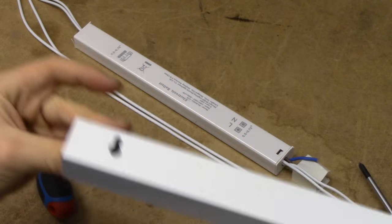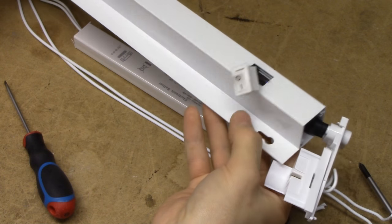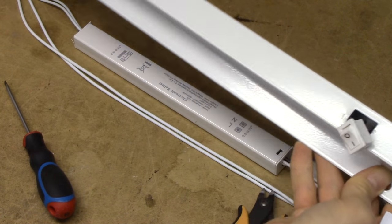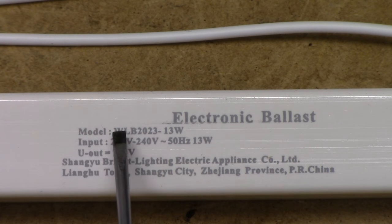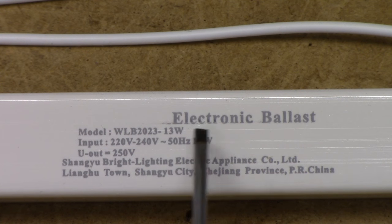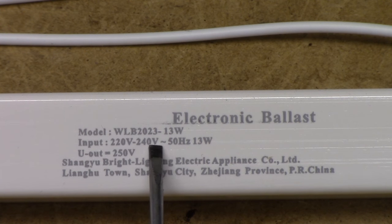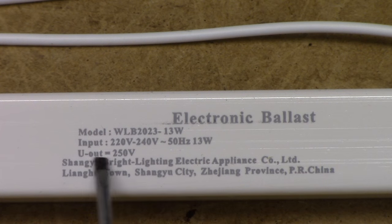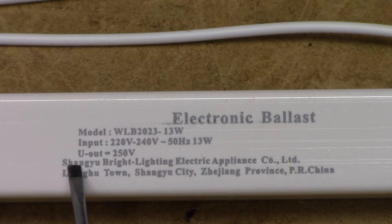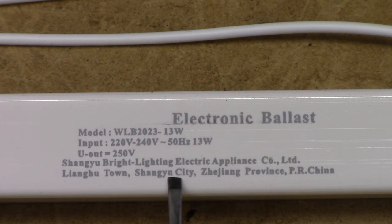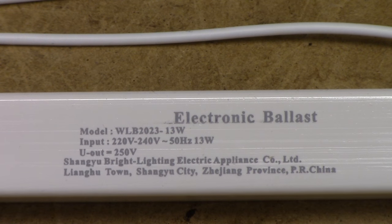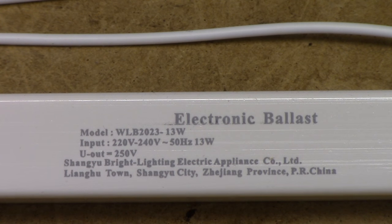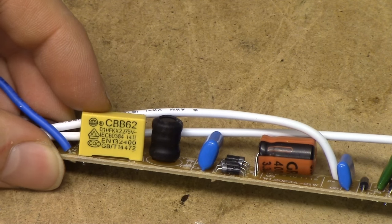And that's our ballast right there. We're left with an empty metal tube, nothing too exciting there. And that leaves us with one electronic ballast, model WLB2023-13W, made for 220-240V, not universal voltage, 50Hz, 13W, made by Shangyu Bright Lighting Electric Appliance Company Limited, Lianghu Town, Shenzhou City, Zhejiang Province, People's Republic of China. So let's see what components they've managed to source in Shenzhou City.